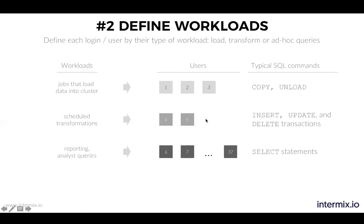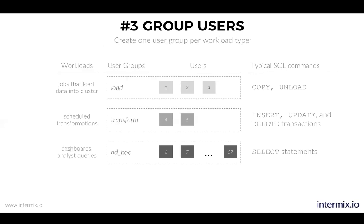Once you've set up your users and categorized them by workload type, you're in a situation where you have visibility to your users and know exactly what workloads they're running. Then you can start grouping them. Redshift has this concept of user groups and query groups. By associating them to a load group, a transform group, and an ad hoc group, you have everybody aligned. This is important because Redshift prioritizes queries based on user and query groups — once a query runs, it checks which group it belongs to and which queue that group is associated with. User groups are the way to go.